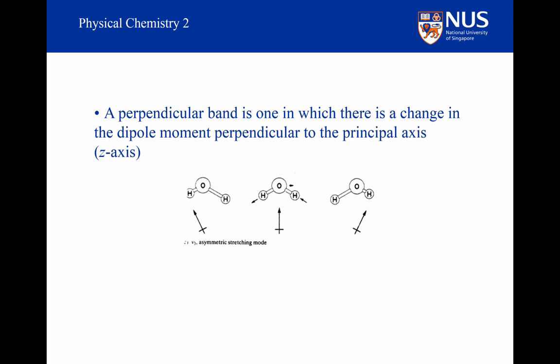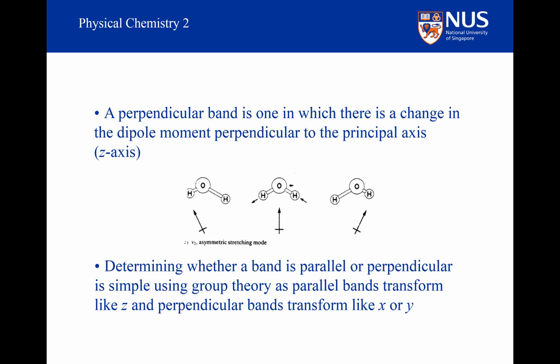Whereas in the perpendicular band, there is a component of the dipole moment changing perpendicular to the principal axis. This can be seen in the asymmetric stretch, which has B2 symmetry. It is easy to determine whether a band is parallel or perpendicular simply by using group theory. If the vibration transforms like z, it is a parallel band, that is, vibrations with A1 symmetry. And if the vibration transforms like x or y, it is a perpendicular band, that is, vibrations with B1 or B2 symmetry.